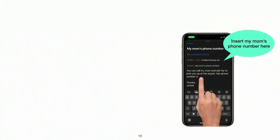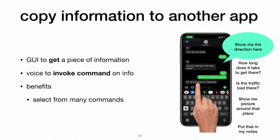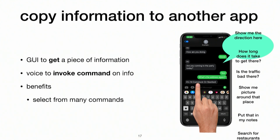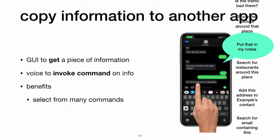Here's what I imagine we'll do in the future: tap on the screen and say "insert my mom's phone number here," and the virtual assistant just puts the phone number in the text box. We ask the virtual assistant to copy information from another app, and use our finger to specify where we want the information placed. You naturally describe the information you want without needing to leave the current GUI context. Similarly, you can send information from your current app to another — for example, a friend texts you an address and you want directions, traffic info, nearby photos, or to save it to notes.